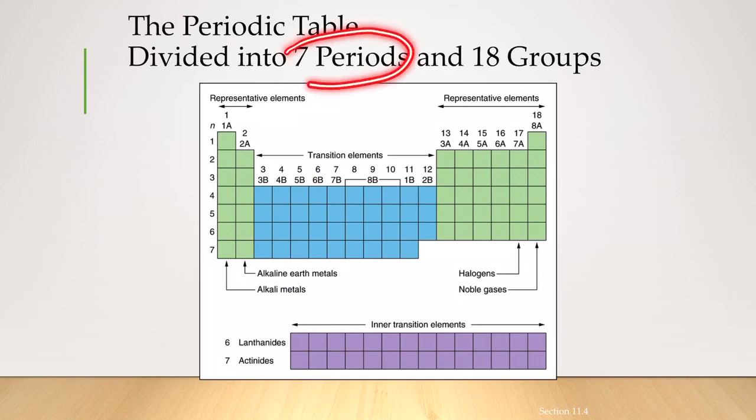So in the modern periodic table, we have a total of seven periods and 18 groups.